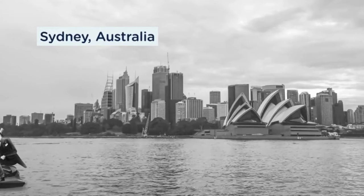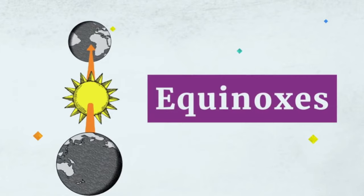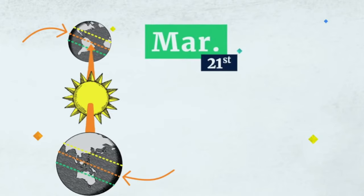So what about equinoxes? That's simple. The equinoxes are when the Sun is right over the equator, in between the two tropics. They occur around March 21st and September 23rd and mark the beginning of spring or autumn.